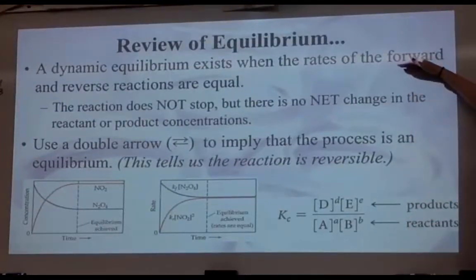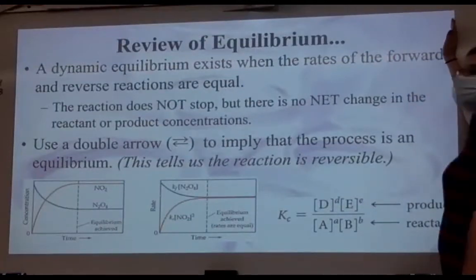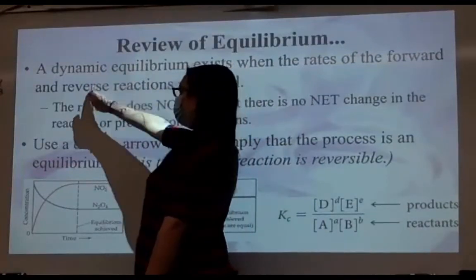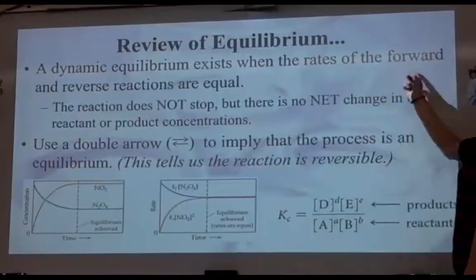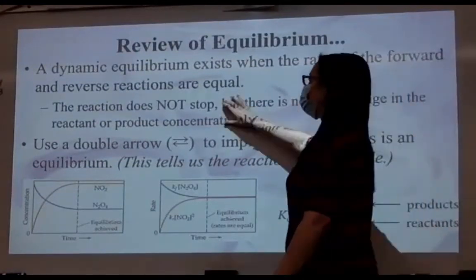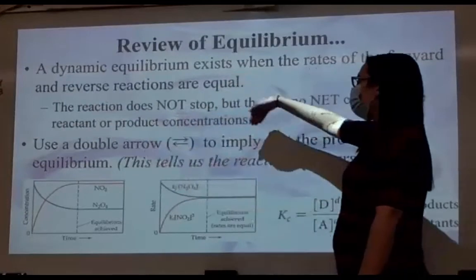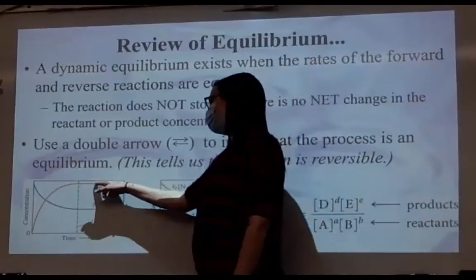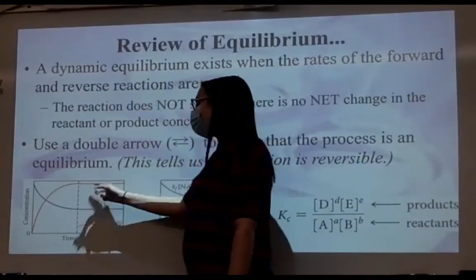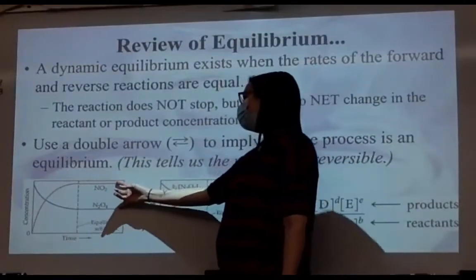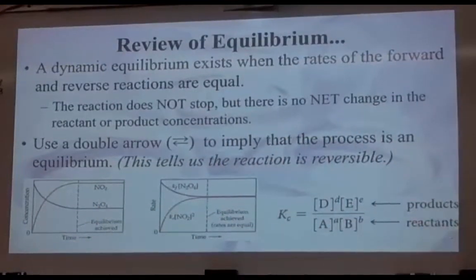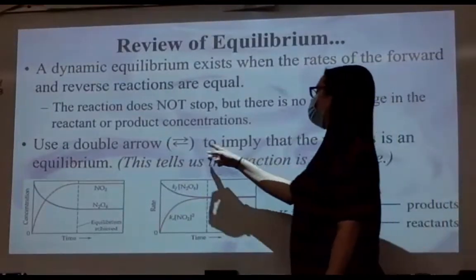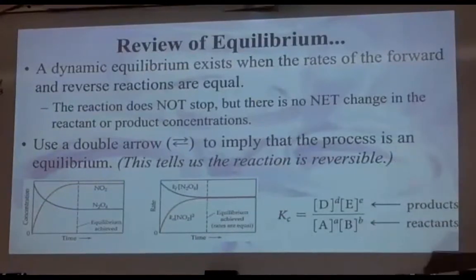When we talk about the forward reaction, that is reactants going to products. When we talk about the reverse reaction, that's products going to reactants. So we always have two reactions occurring if we're at equilibrium. This is super important: the reaction does not stop. When we're talking about equilibrium, the reaction does not stop. It might look like it has because the concentrations remain constant, but the reaction is still going — there's just no change in concentration.